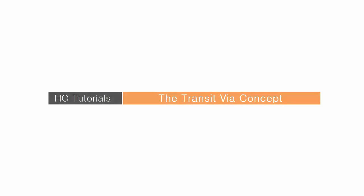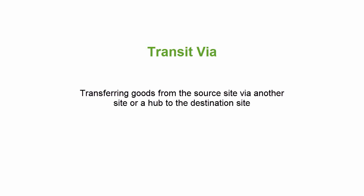You could bring down the transportation charges by using the transit via option in Genesis. In this tutorial we would be looking into the transit via concept. Transit via is nothing but transferring the goods from the source site via a site or a hub to the destination site.